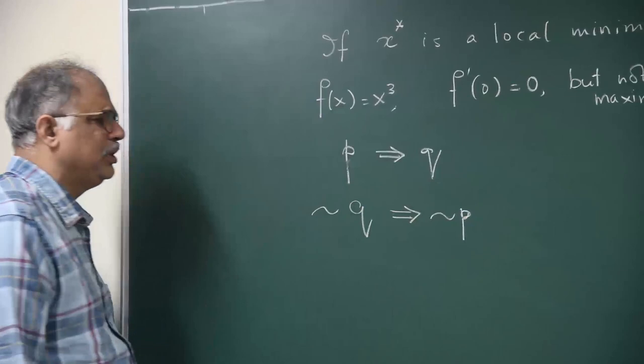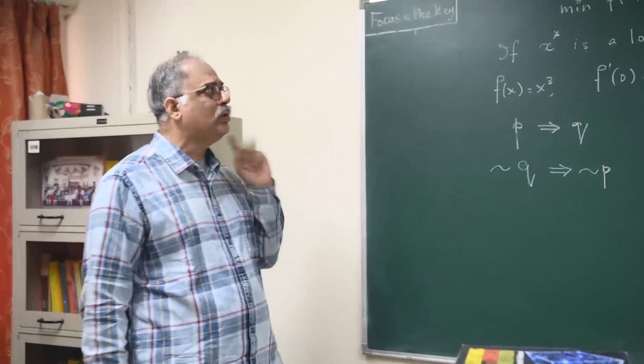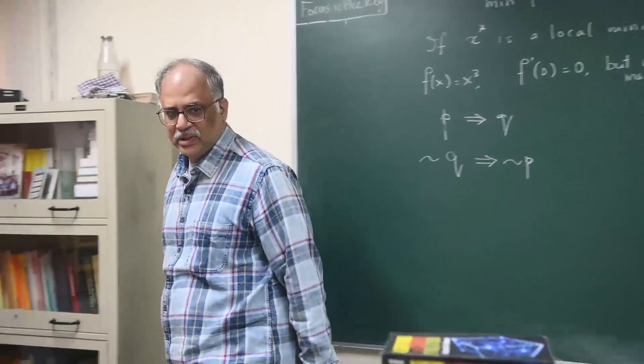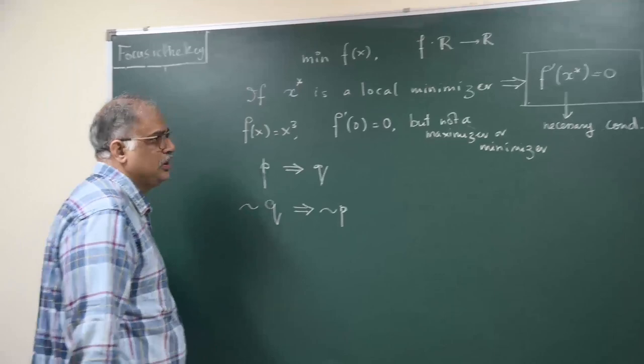So if x star is a local minimizer, this is a statement implies that f'(x) is equal to zero. So if f'(x) is not equal to zero, then x star is not a local minimizer. That is the real power. It can tell you whether a point is a minimizer or not.